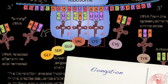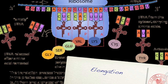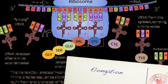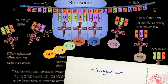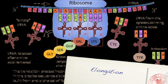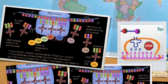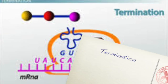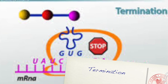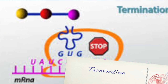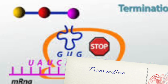The ribosome also bonds the two tRNA amino acids together and breaks the tRNA away from its amino acid. The ribosome keeps moving along the mRNA strand until it reaches a stop codon. The result is a polypeptide.